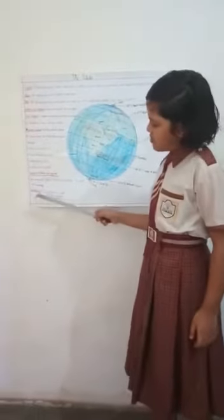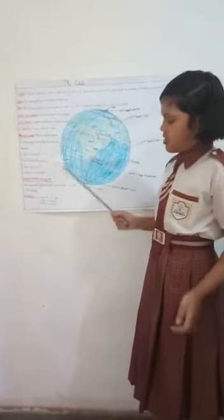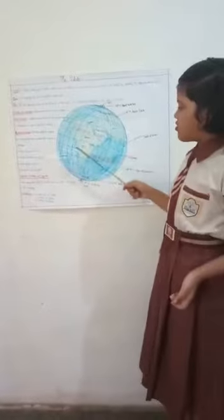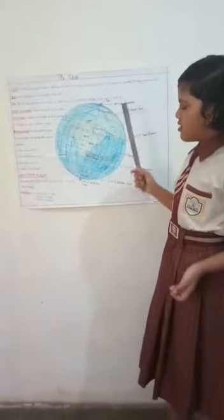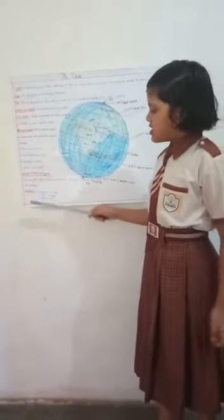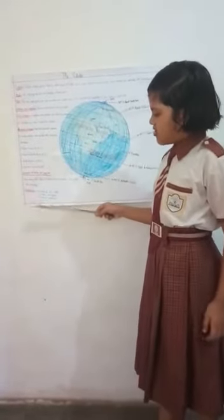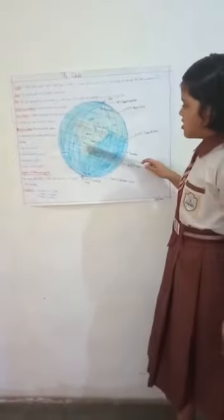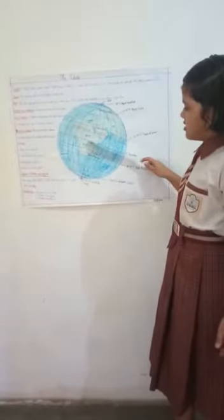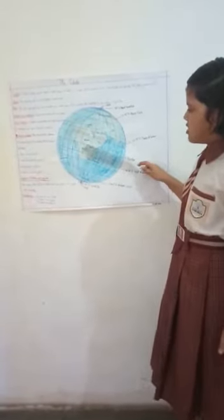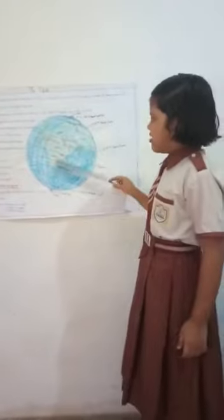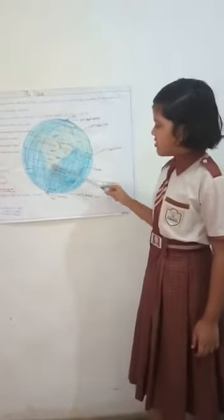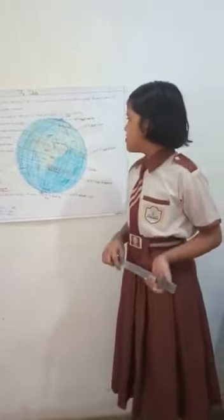Hemisphere means half part of the Earth. There are two hemispheres: 1. Northern Hemisphere and 2. Southern Hemisphere. The equator divides the Earth into two equal parts. The upper half is the Northern Hemisphere and the lower half is the Southern Hemisphere.